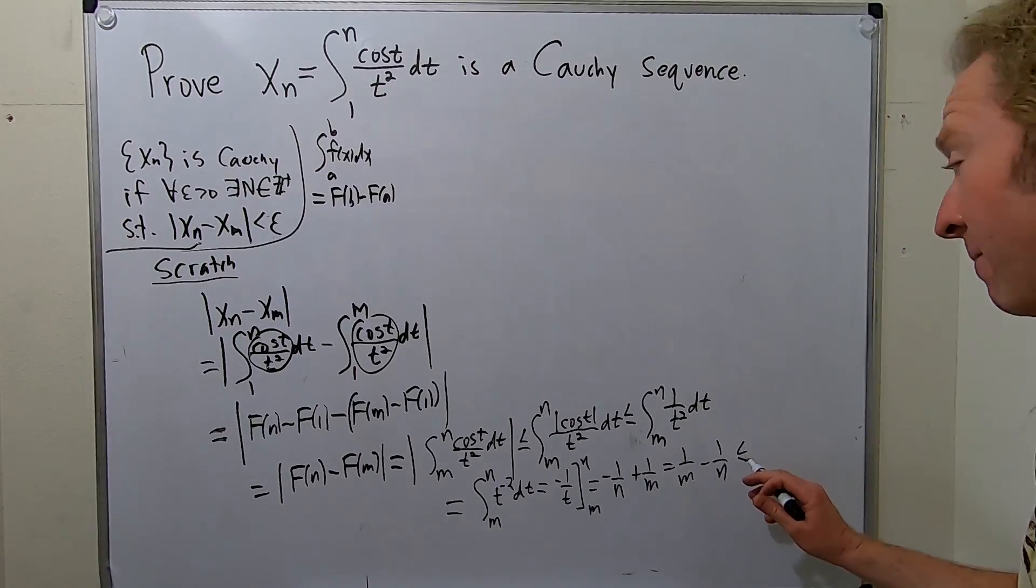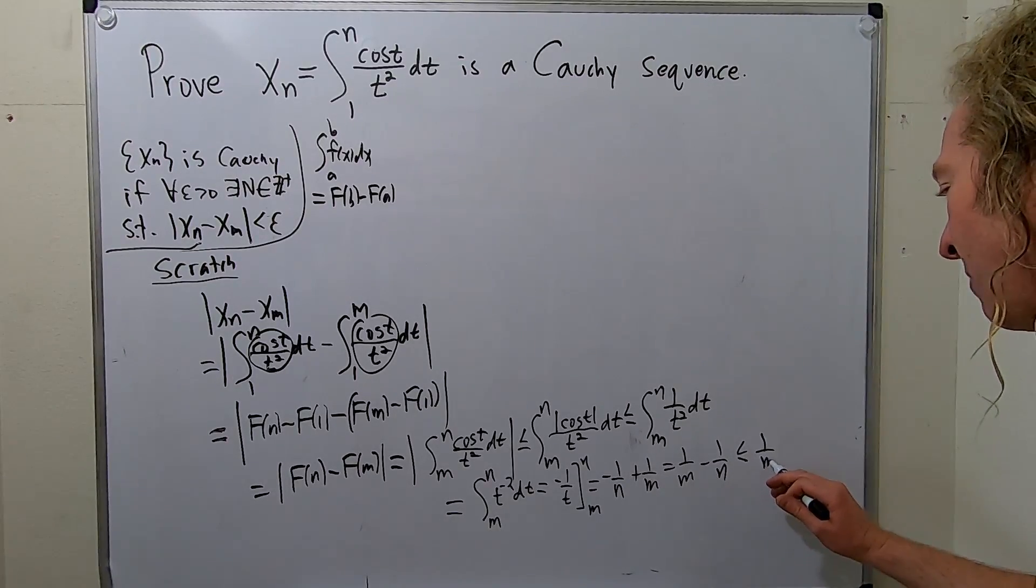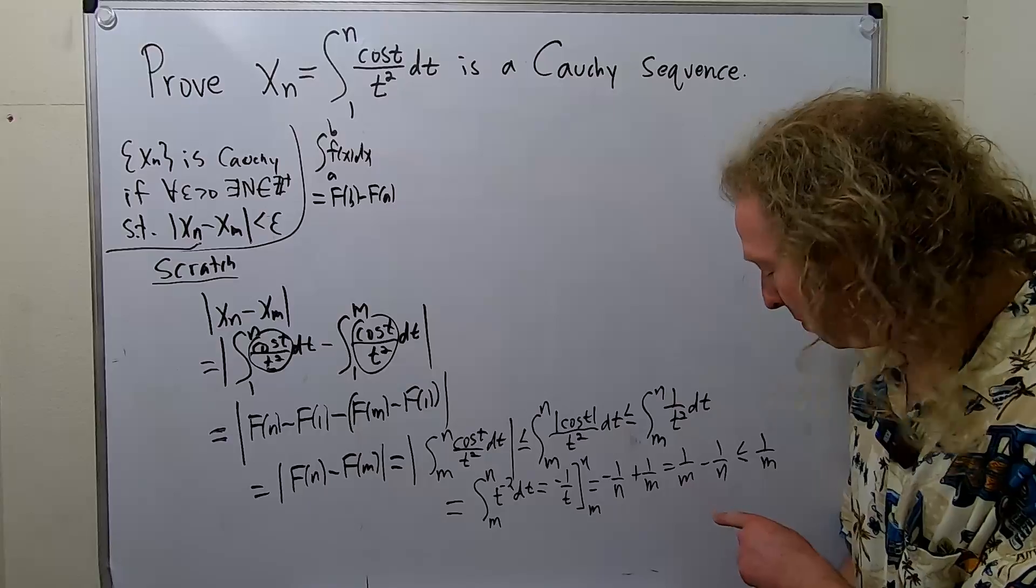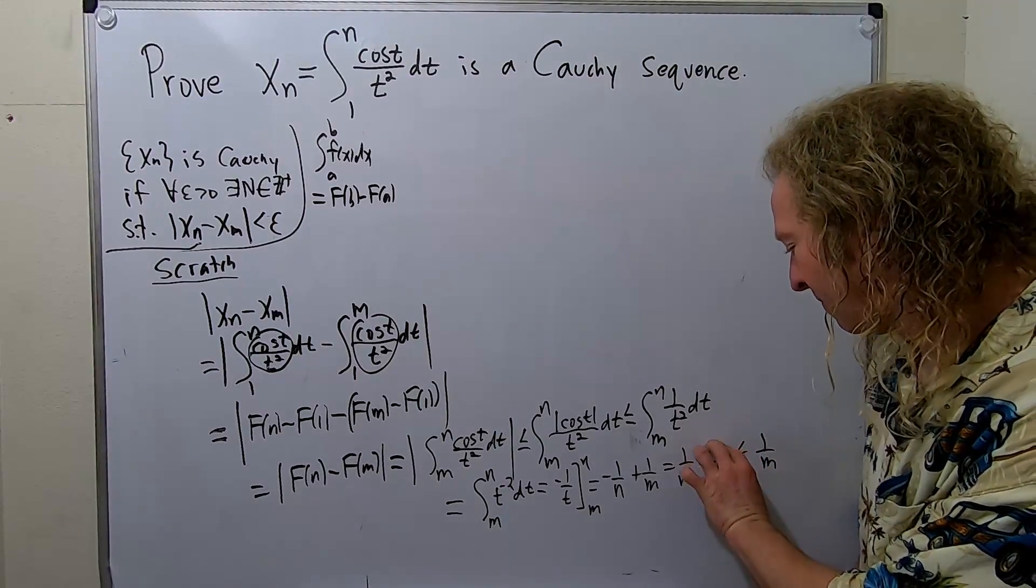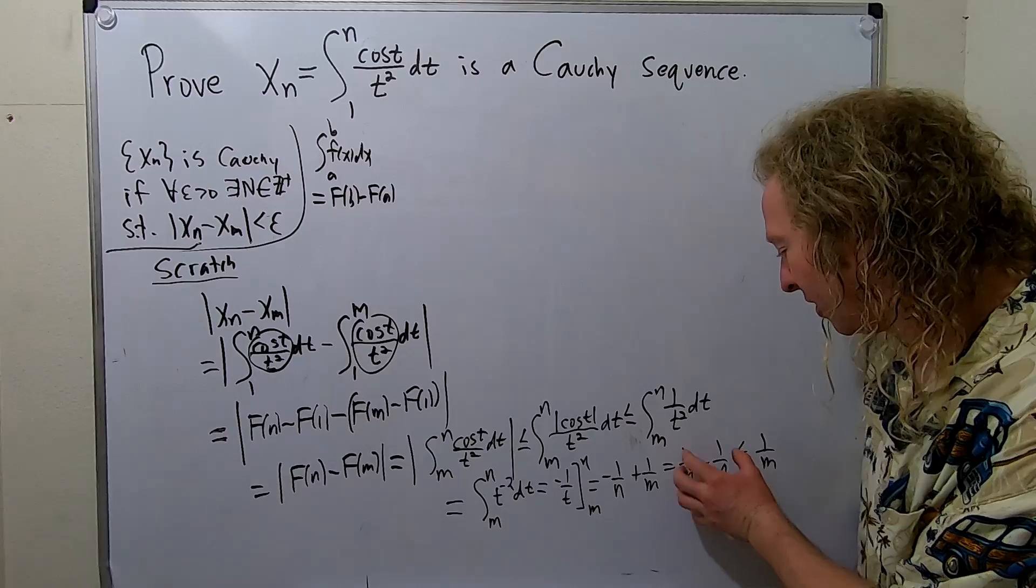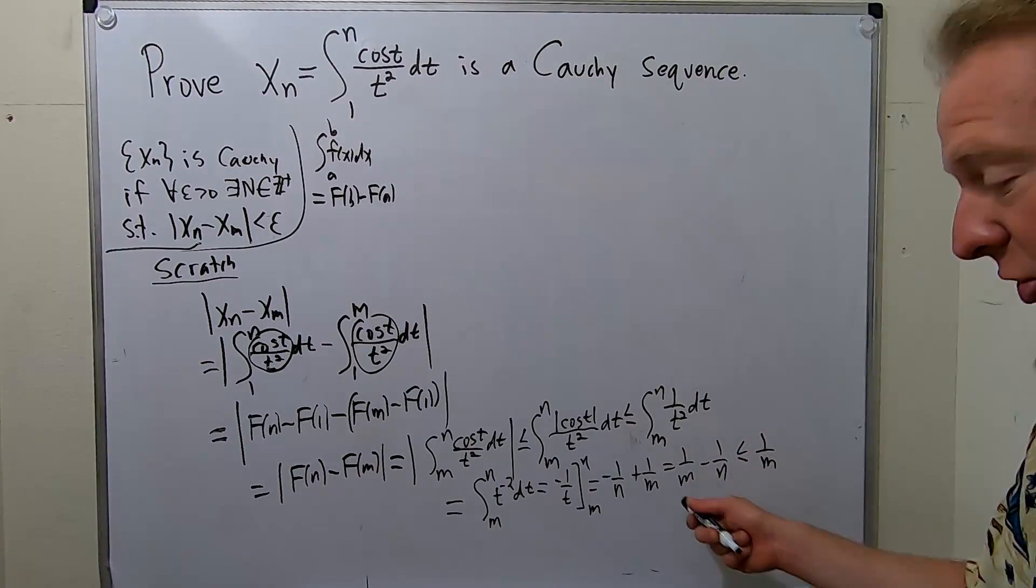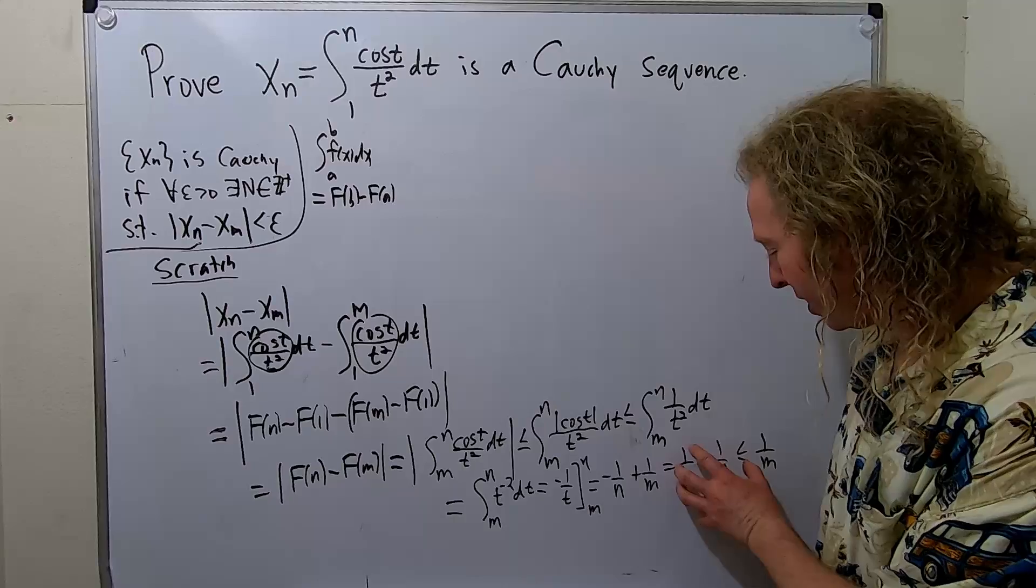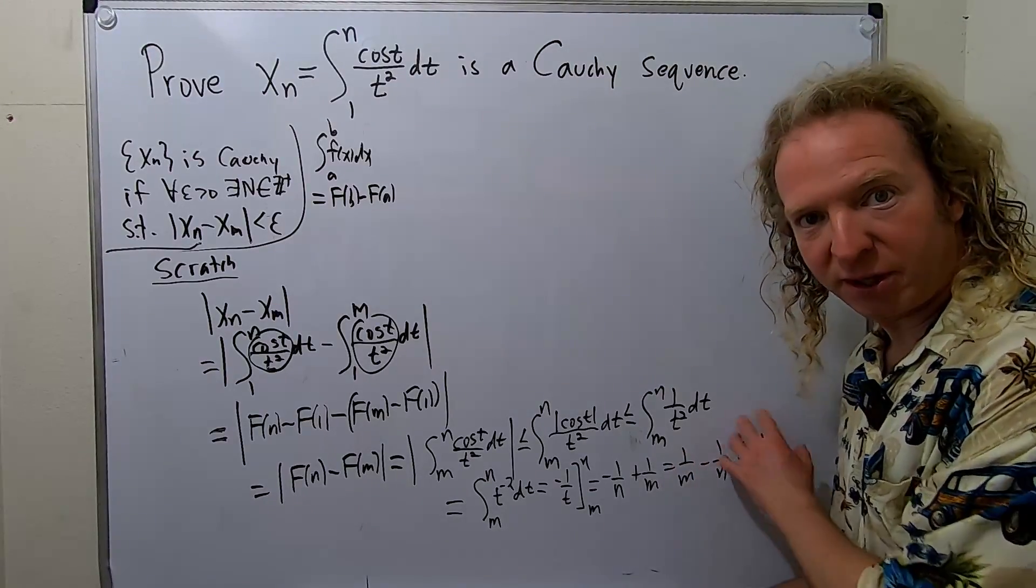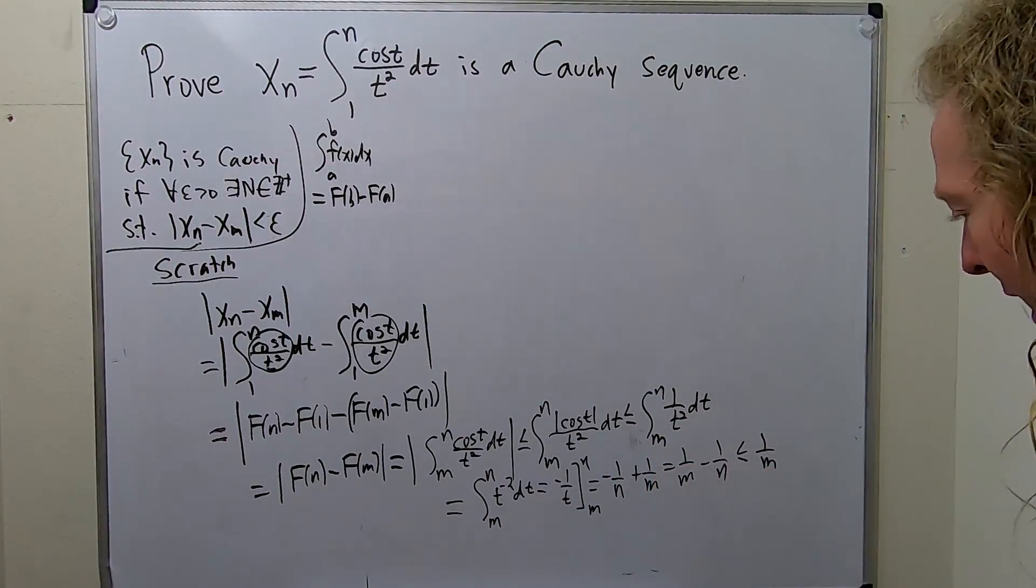This is less than or equal to 1/m. Right? n and m are positive integers here. Because, so if this is 1, I mean, this is going to be 1 something minus something, so this will always be true, no matter what, because you're subtracting something, right? If you have a number minus another positive number, that's smaller than just the number, right? No matter what. So, that should be true.